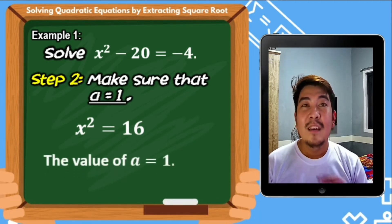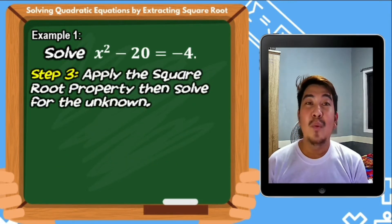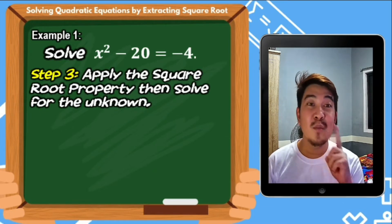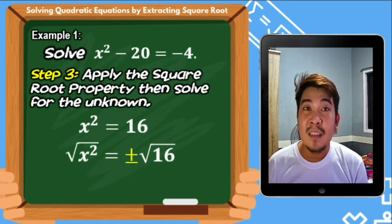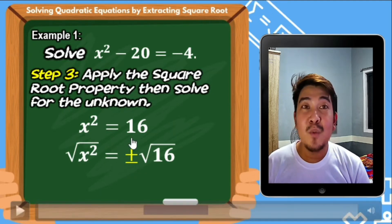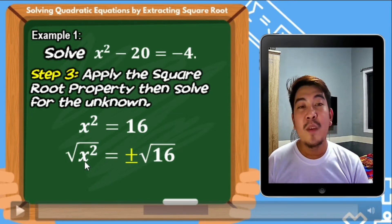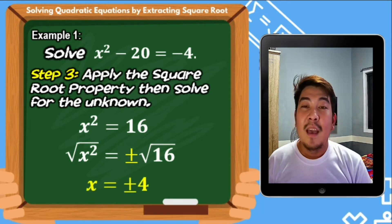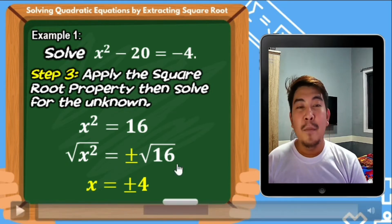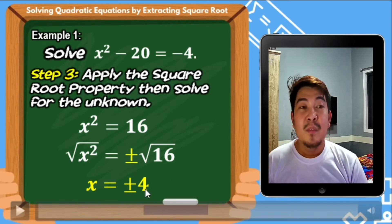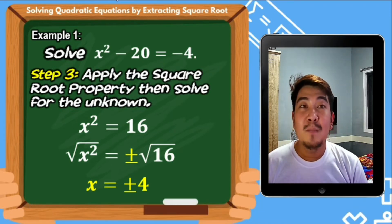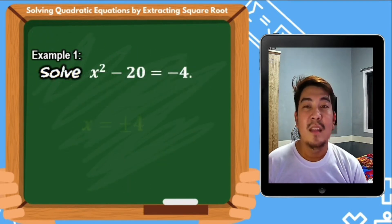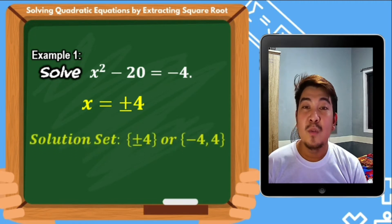Step number 3: we apply the square root property by extracting the square roots of both sides of the equation. From x squared equals 16, we extract both sides. Remember from the square root property, when extracting it should come with positive and negative signs. The square root of x squared is x, and the square root of 16 — the number multiplied by itself to get 16 — is 4. So the solutions are x equals positive or negative 4.